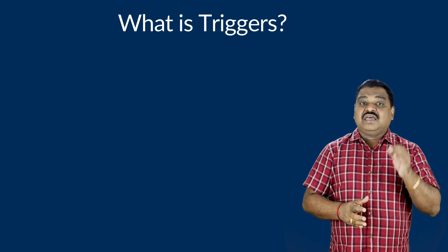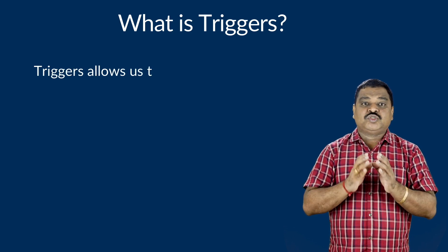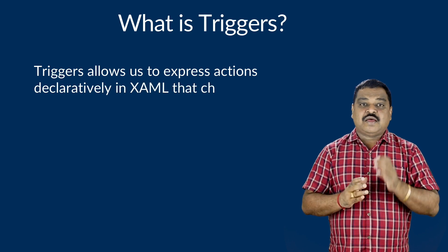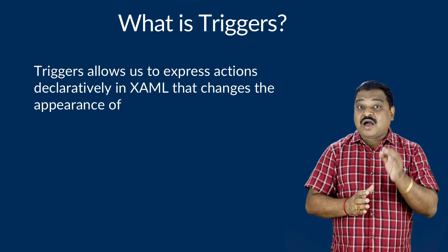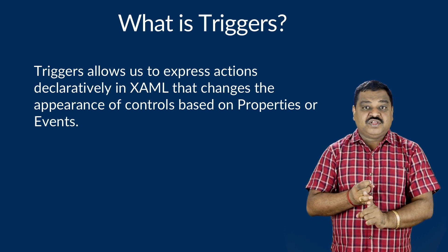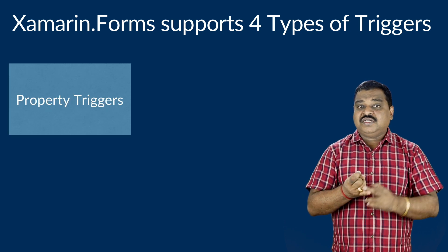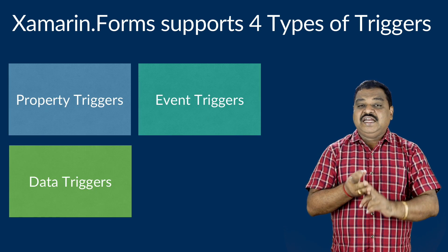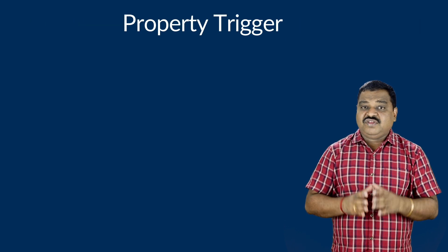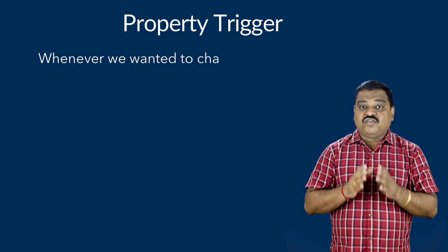So what is a trigger? In simple terms, triggers allow us to express actions declaratively in XAML that change the appearance of controls based on properties or events. Xamarin Forms supports four types of triggers: property triggers, event triggers, data triggers, and multi triggers.